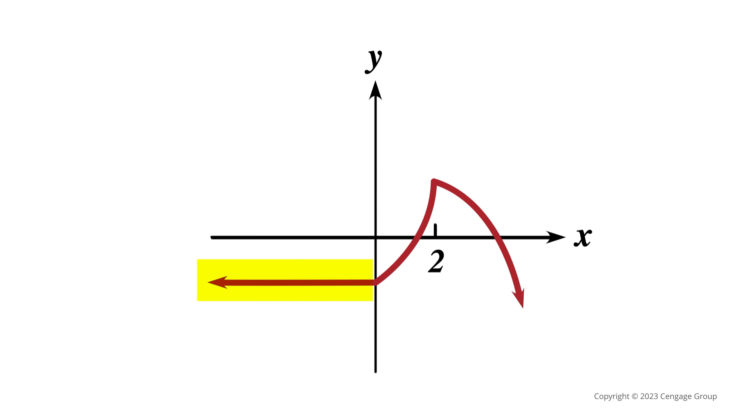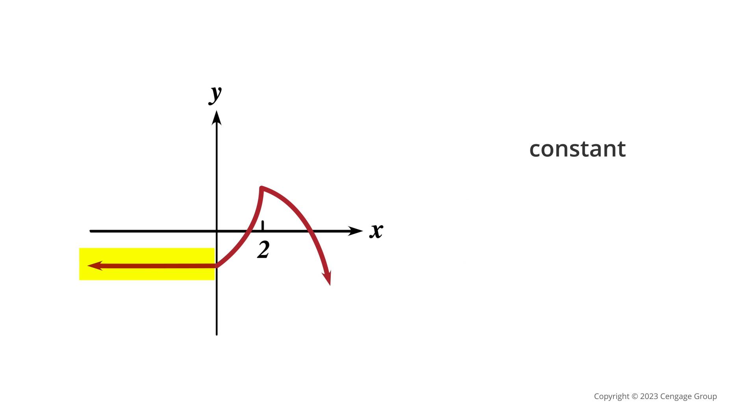On this first interval, the values of the function remain constant as x increases. So we say the function is constant for x values that are less than 0. In interval notation, we write negative infinity comma 0 to represent this interval.